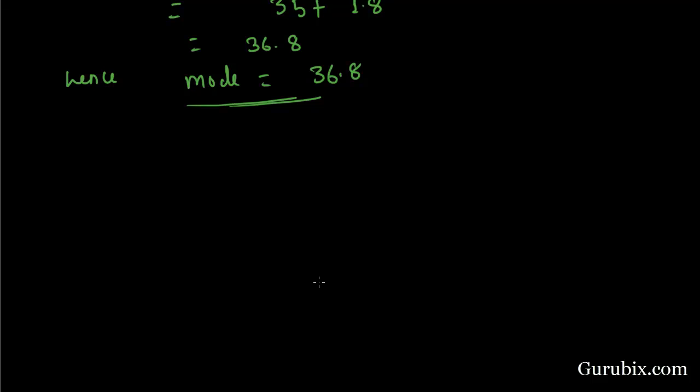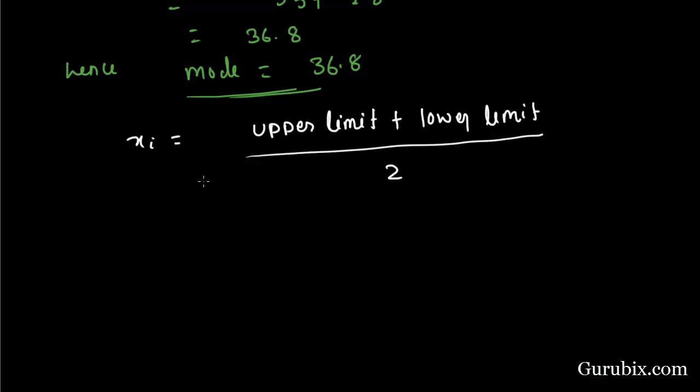Now, we have to calculate mean. For calculating mean, we have to find xi means class mark. We know that xi is equal to upper limit plus lower limit divided by 2. We can calculate class mark of each interval by the help of this formula.